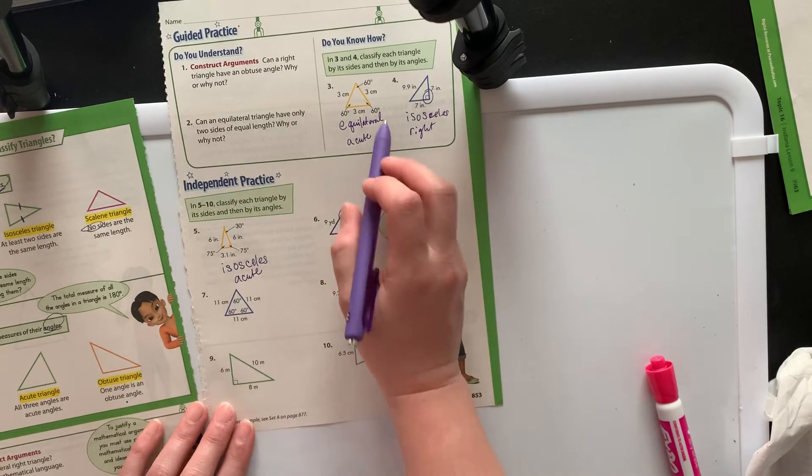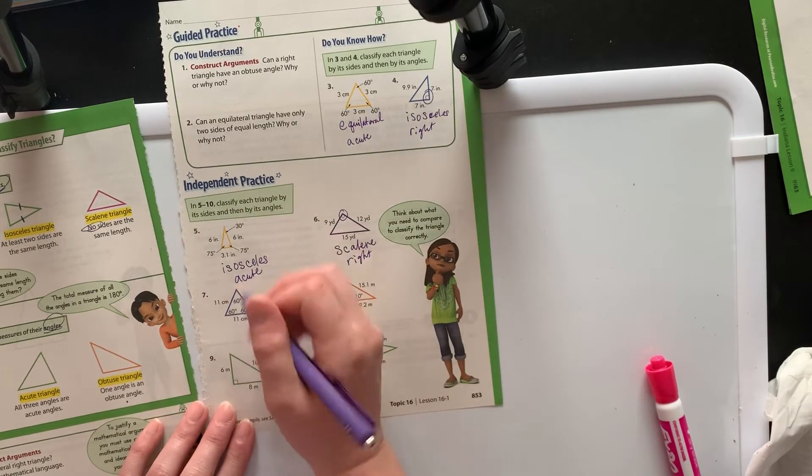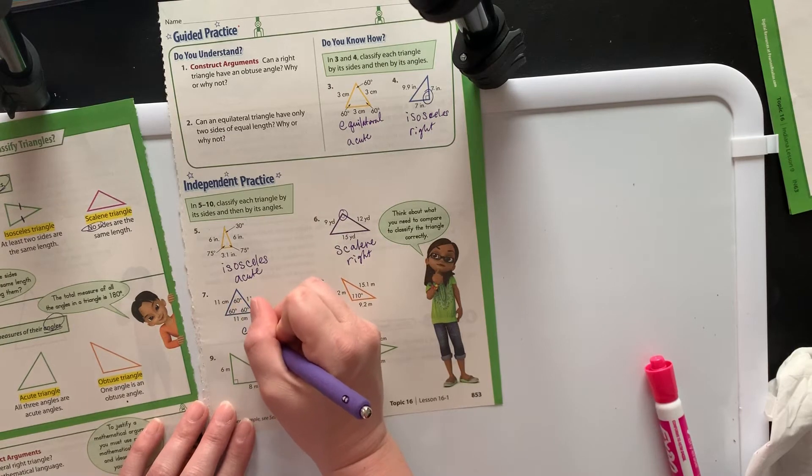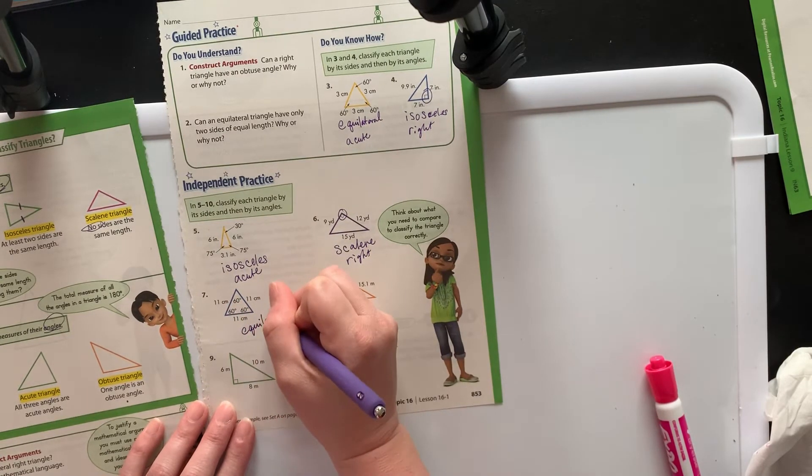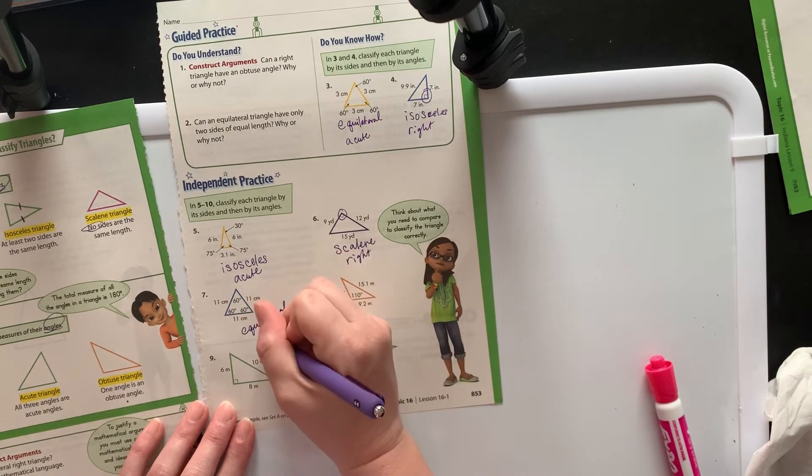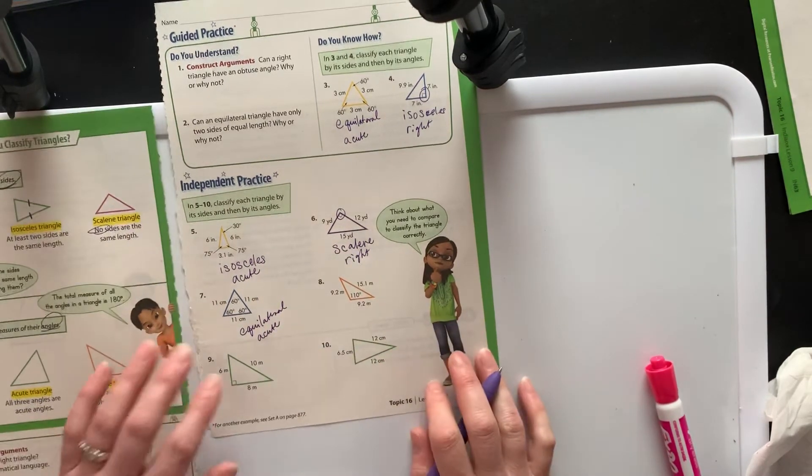Here we have, again, this is going to be equilateral acute. We've got all the same sides and all the same angles, so this is going to be equilateral triangle. Sides the same length, and they're all under 90, which means they're all going to be acute.